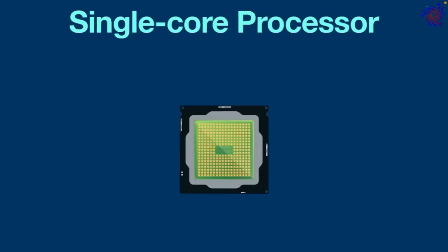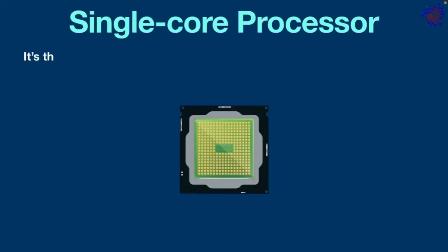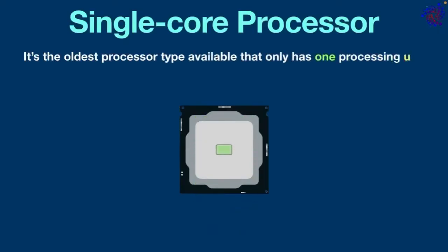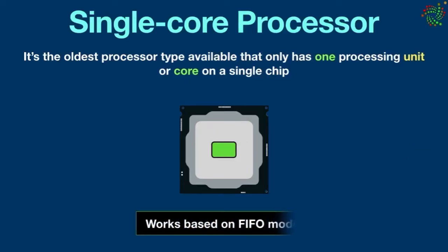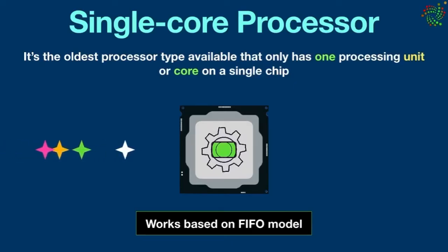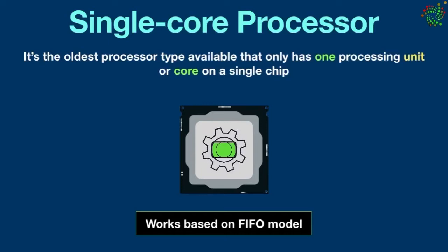Single core processor — it is the oldest processor type available that only has one processing core or unit on a single chip. A single core processor can execute only one task at a time, which is inefficient for multitasking. It works based on the FIFO model, meaning if one operation is started, the second process must wait until the first one is finished.